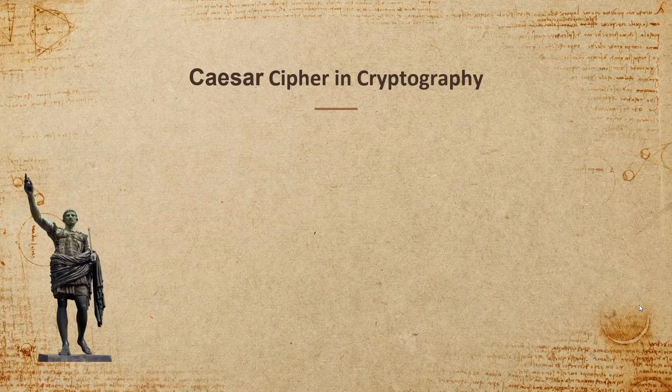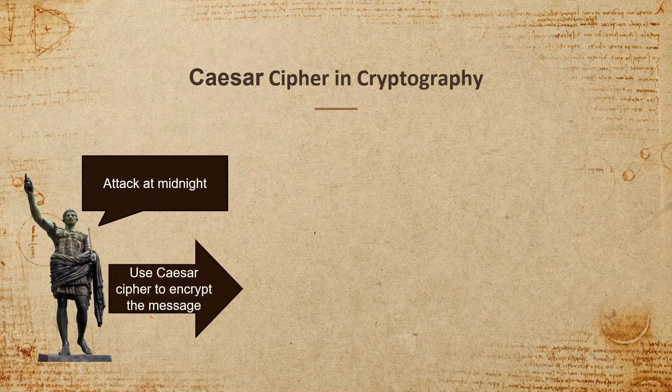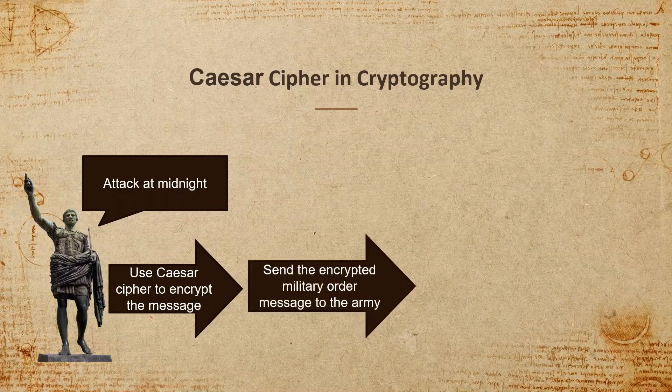Julius Caesar has the message 'attack at midnight,' which is a military order to be sent to his military waiting to attack. He needs to encrypt the message using the Caesar cipher, then use his messenger to send the encrypted military order to the army.